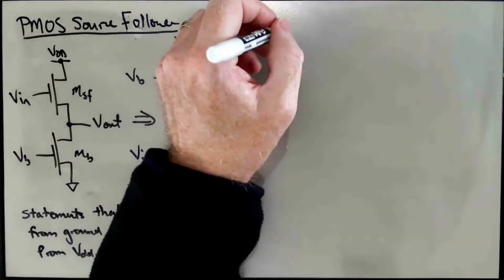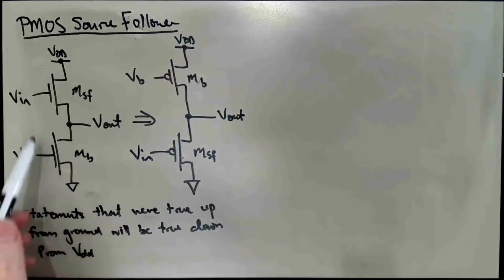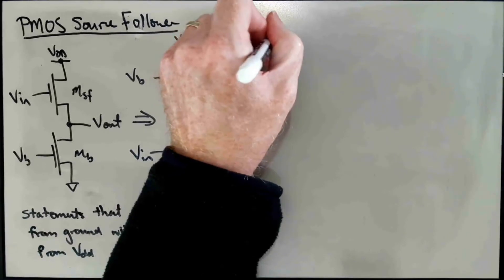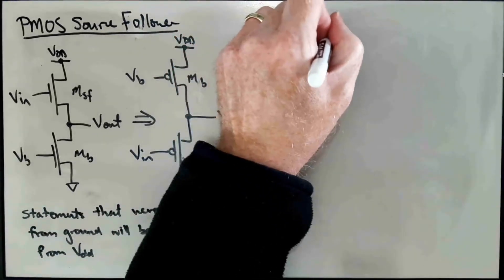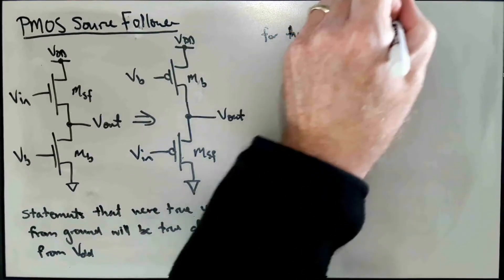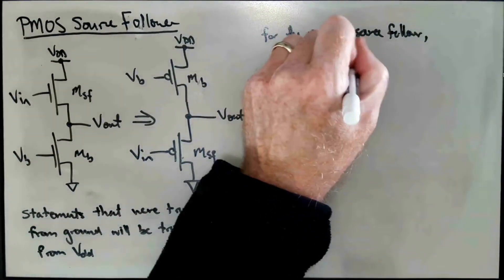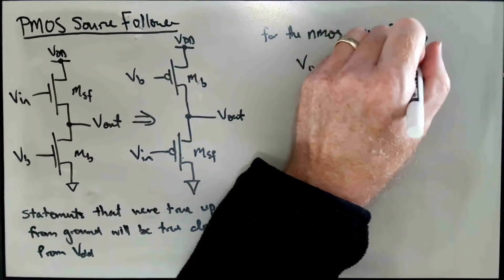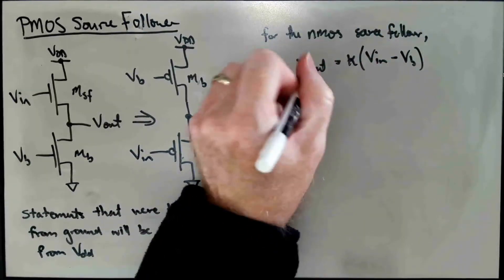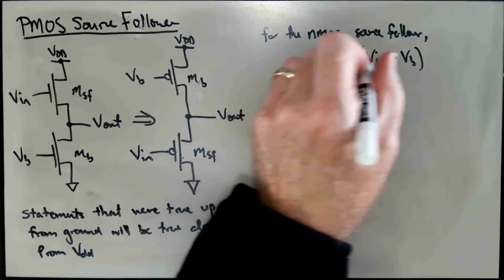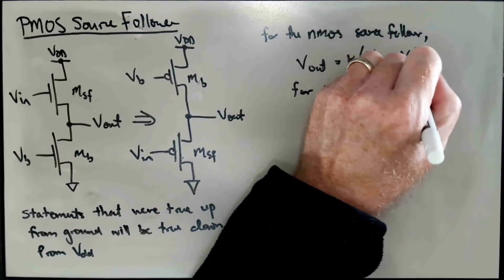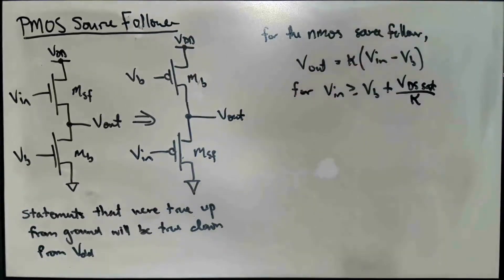So how does that work? For the analysis of the voltage transfer characteristics, for the NMOS source follower, Vout was Kappa times VIN minus VB, and that was true for VIN greater than or equal to VB plus VDSsat over Kappa.